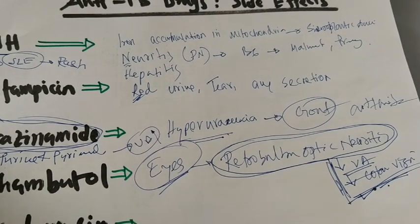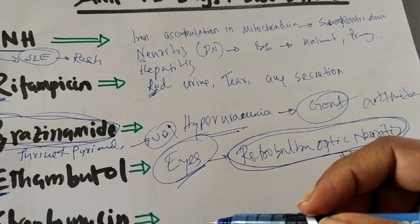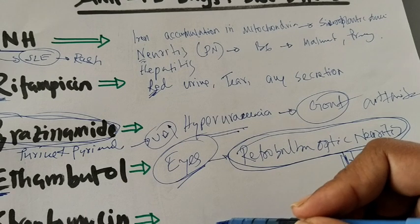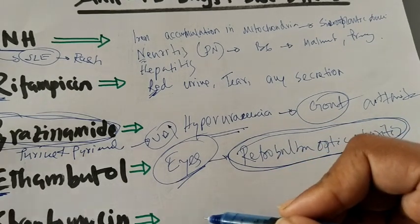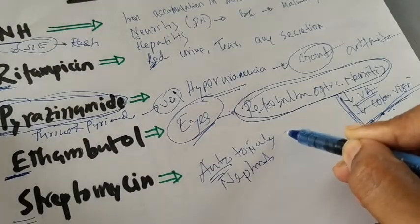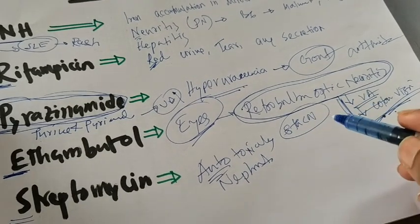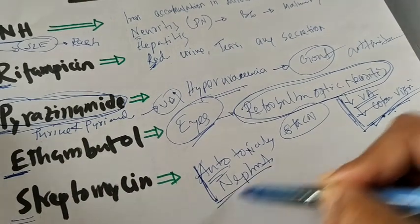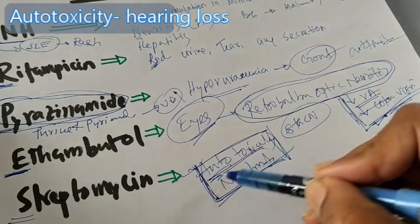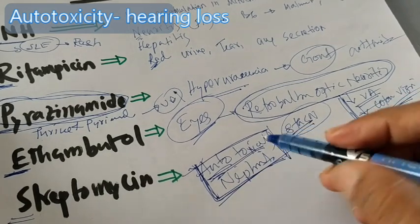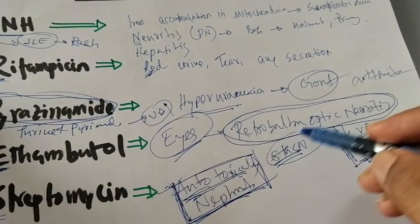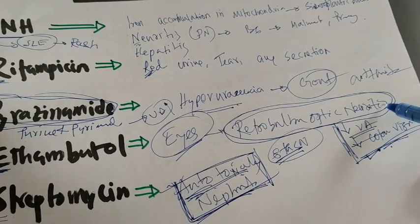For Streptomycin, there is no specific tip or trick. From pharmacology, we know Streptomycin is a member of the Aminoglycoside family, and Aminoglycosides in general cause ototoxicity and nephrotoxicity. Ototoxicity means damage to the 8th cranial nerve. Importantly, this damage — both ototoxicity and nephrotoxicity — may be irreversible. In contrast, Ethambutol-induced Retrobulbar Optic Neuritis is totally reversible.